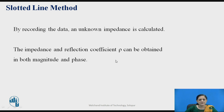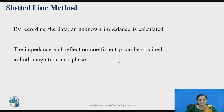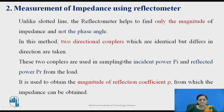The impedance and the reflection coefficient can be obtained in both magnitude as well as in phase using the slotted line method. The reflection coefficient is defined as the amount of the wave reflected back out of the incident wave, and it is denoted by the symbol rho.